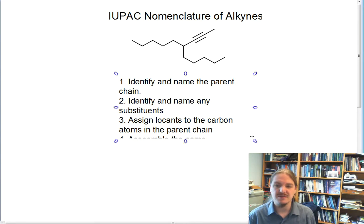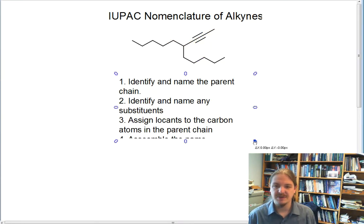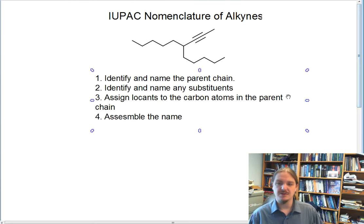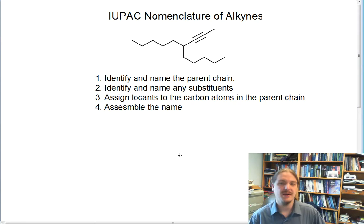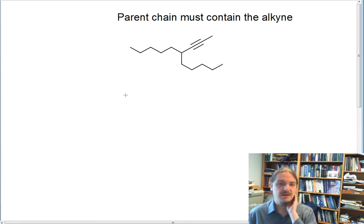This really just follows the same process that we would use to name or generate the IUPAC name of any kind of molecule. So let's go ahead and start stepping through the process. Here is our alkyne again. Now we're going to figure out the parent chain.